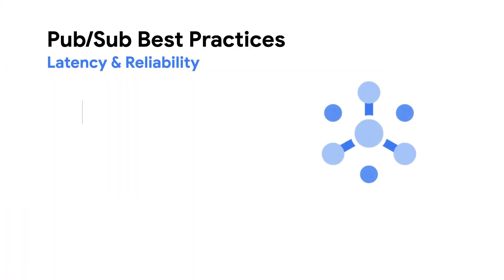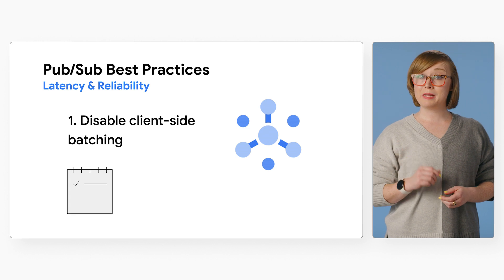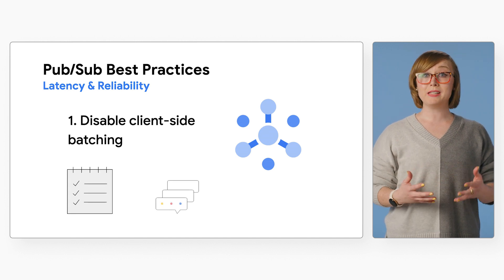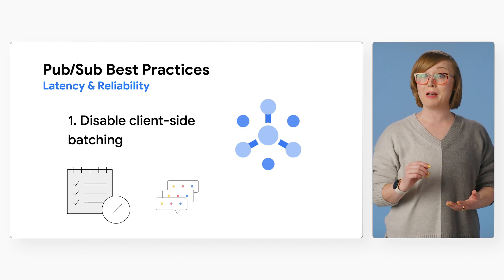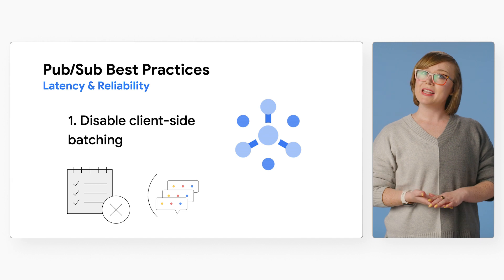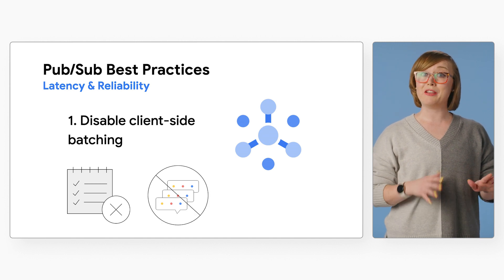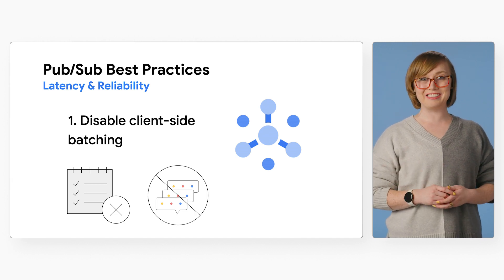Number one: disable client-side batching. Consider disabling client-side batching to avoid messages accumulating before they're published. In this case, you're choosing latency over throughput and cost.